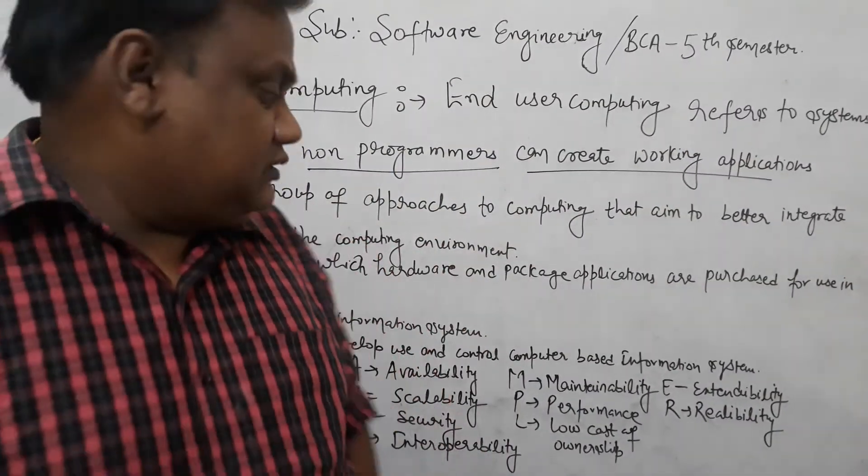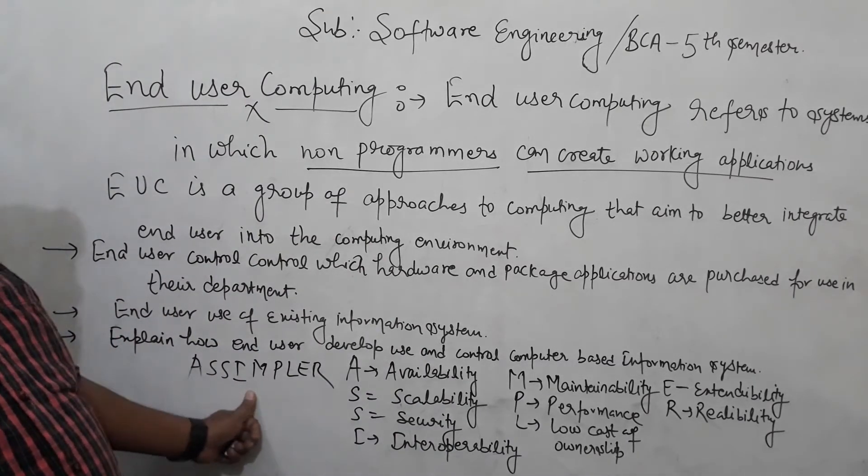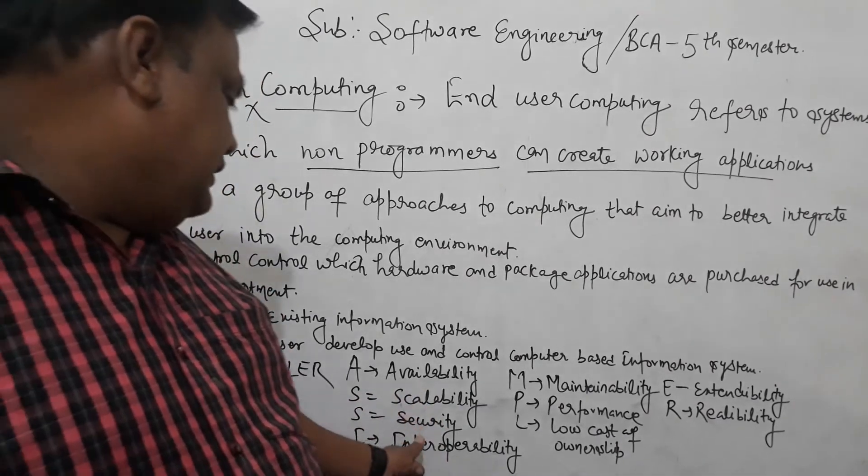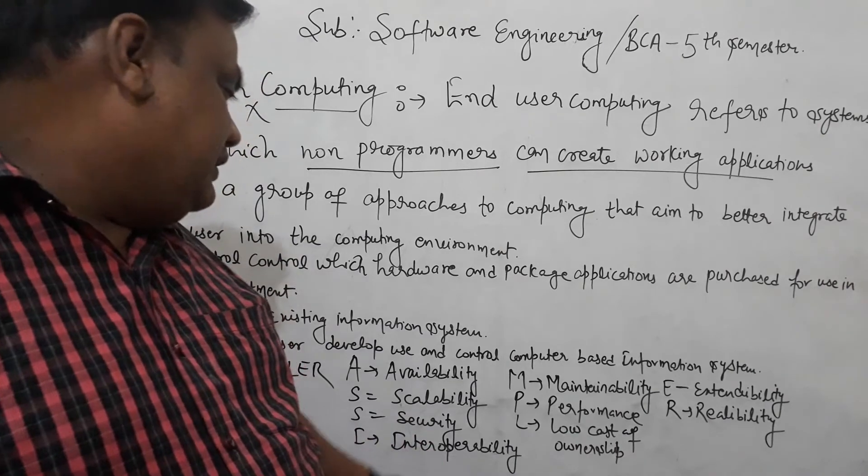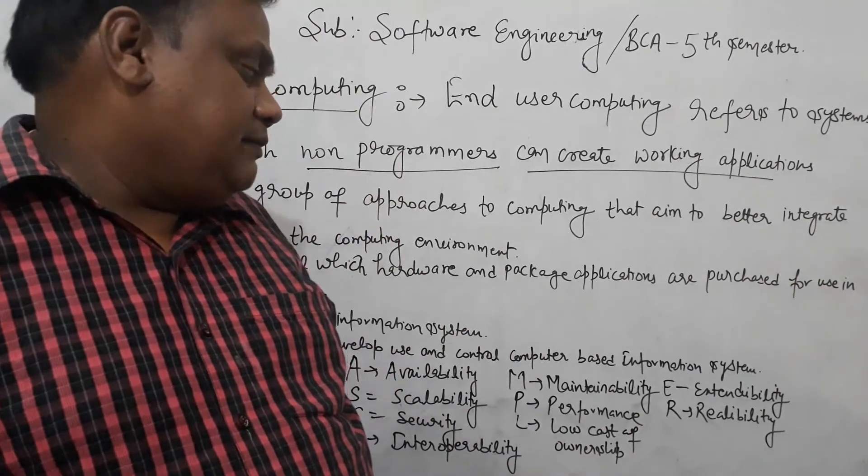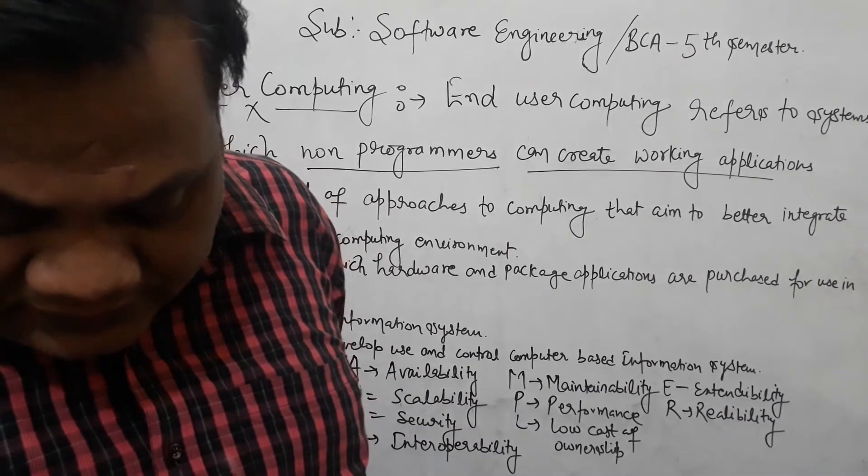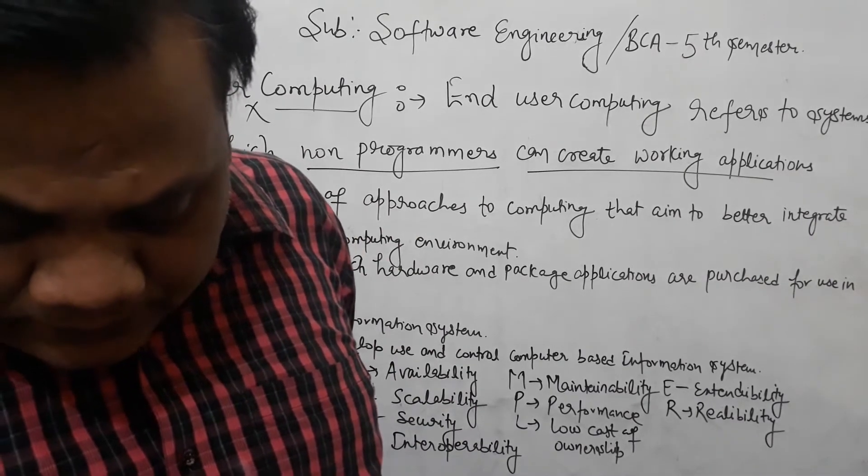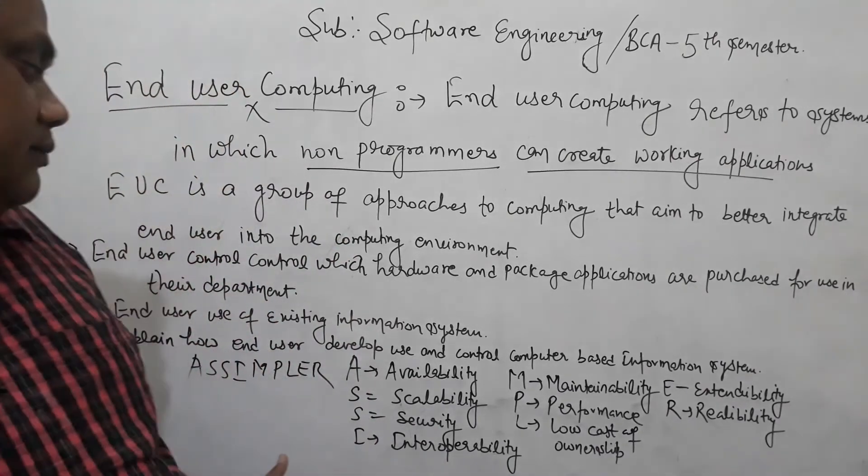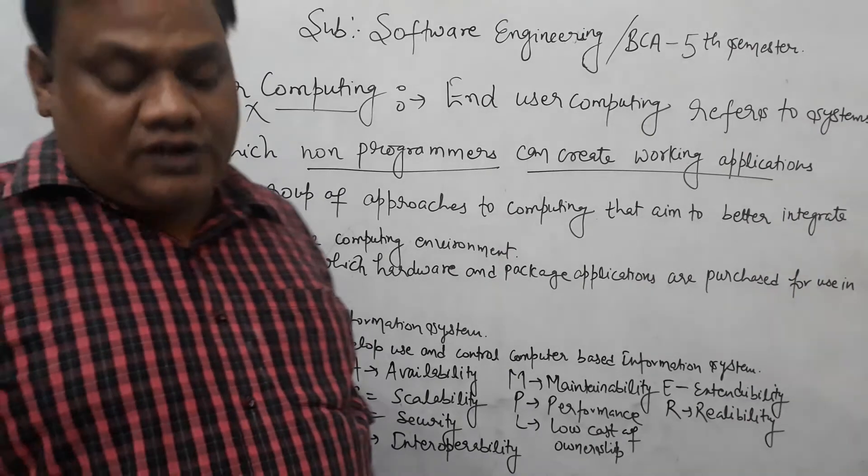These are the parameters: Assembler A for Availability, S for Scalability, Security, Interoperability, M for Maintainability, Performance, Low cost of ownership, E for Extendability, and R for Reliability to develop the End User Computing strategy. These are factors which build up End User Computing.